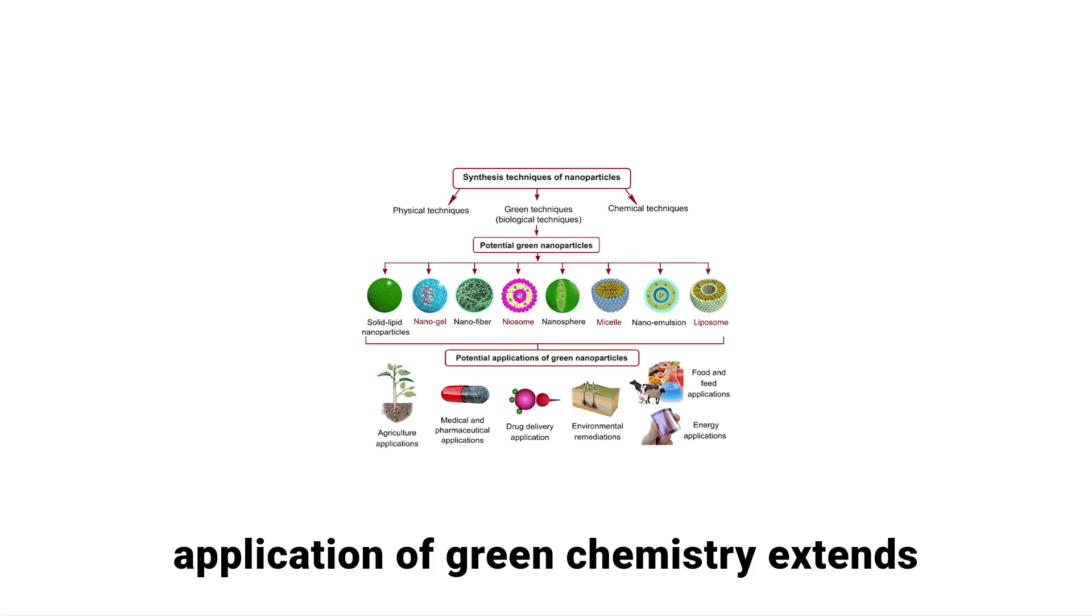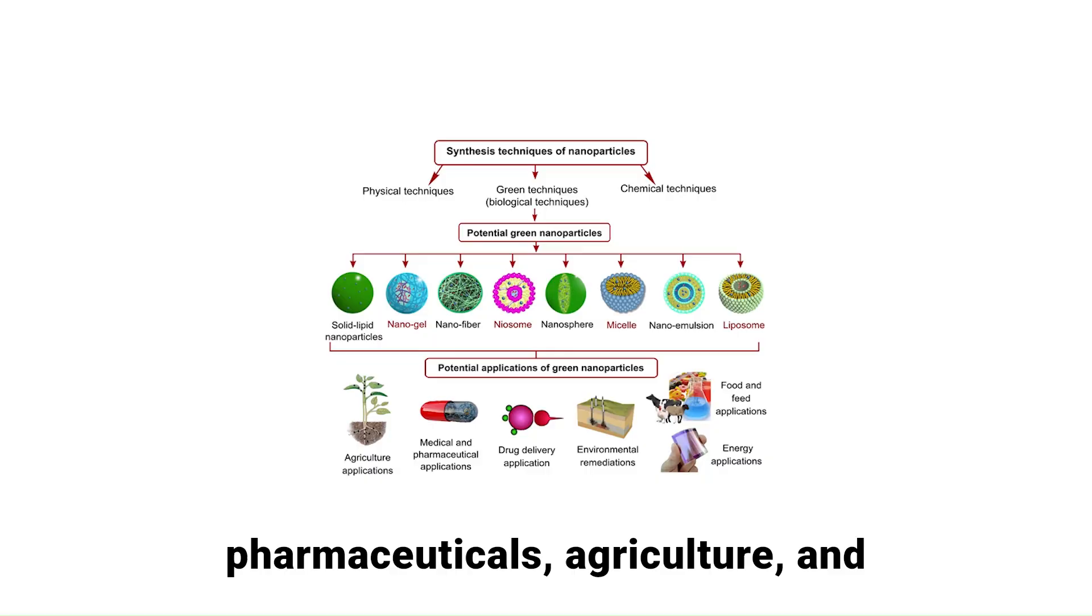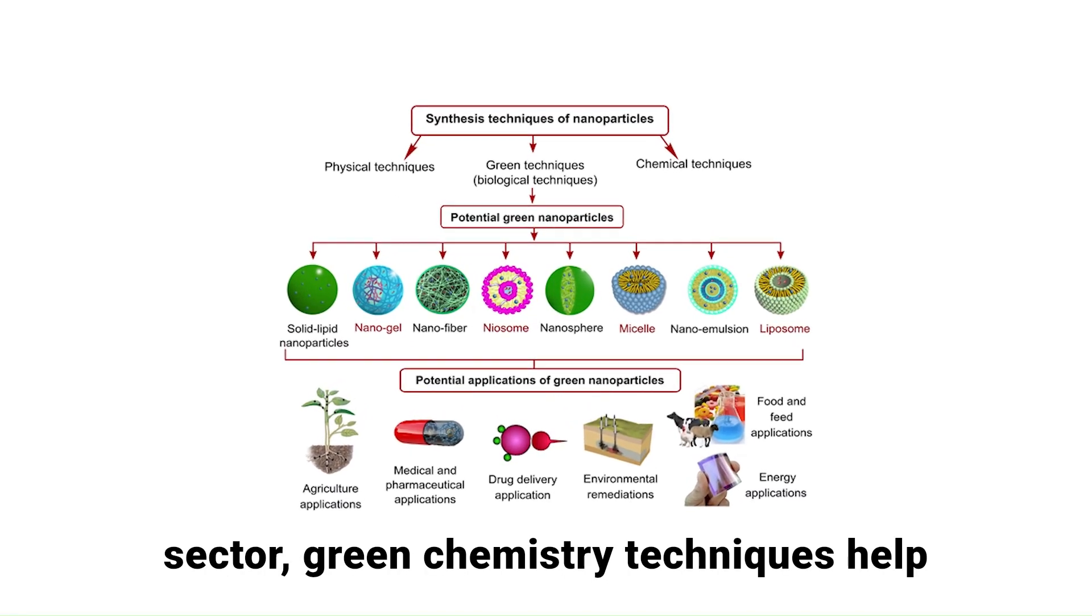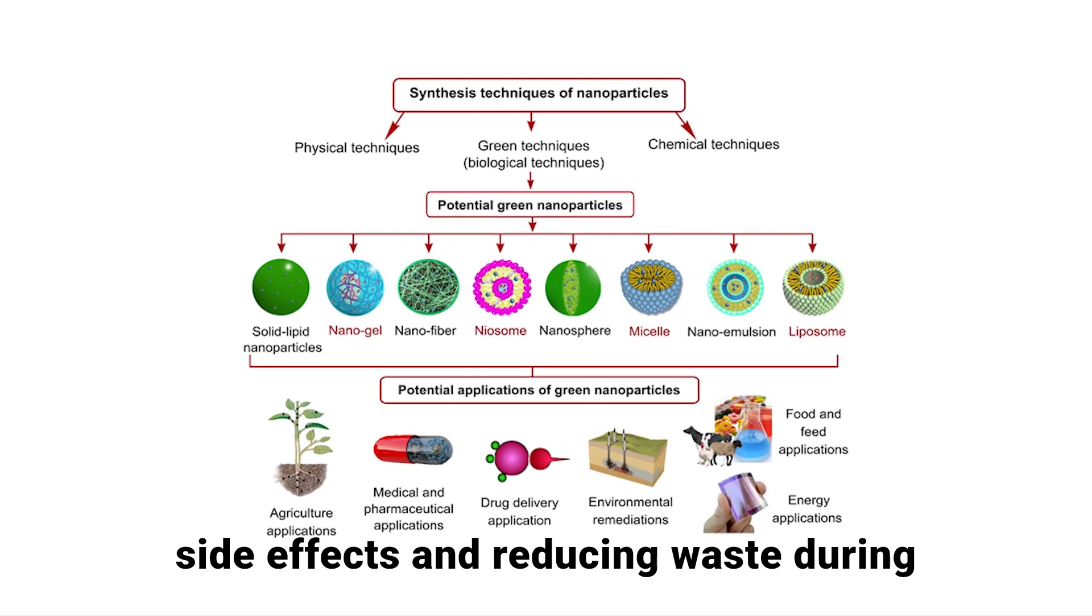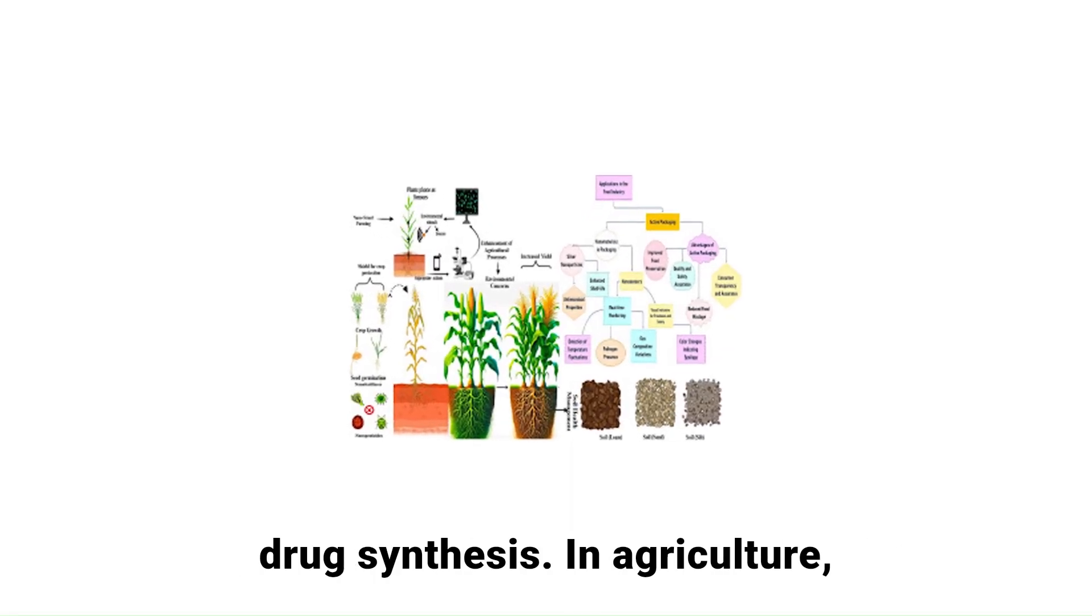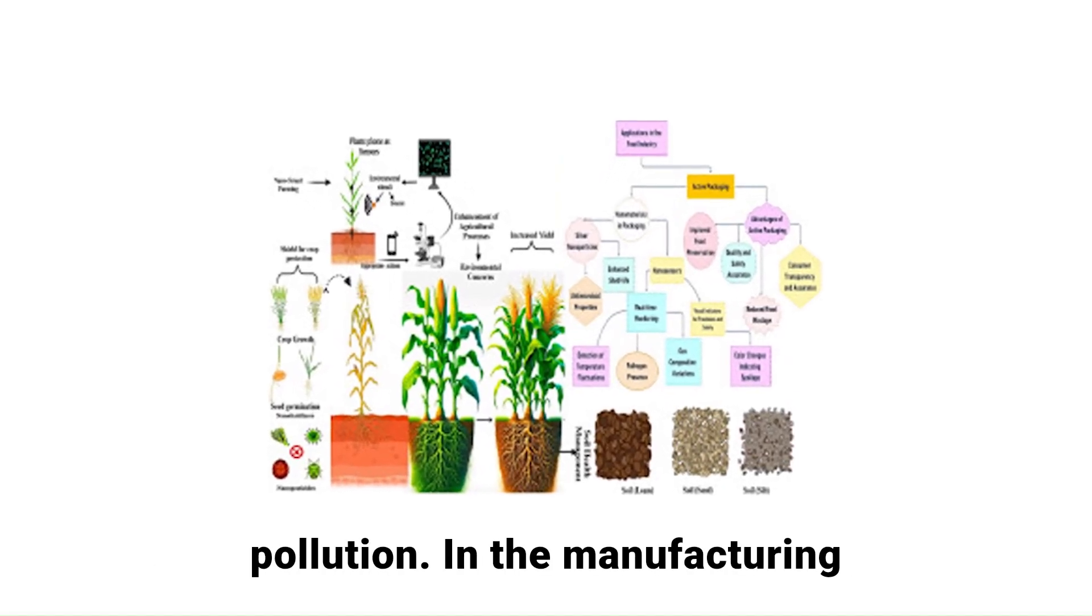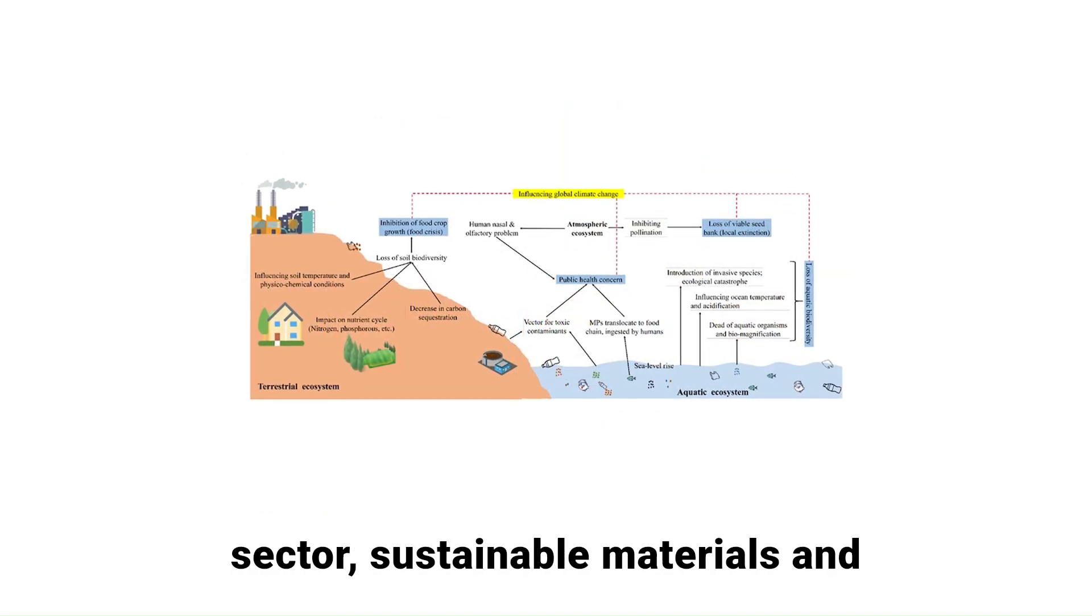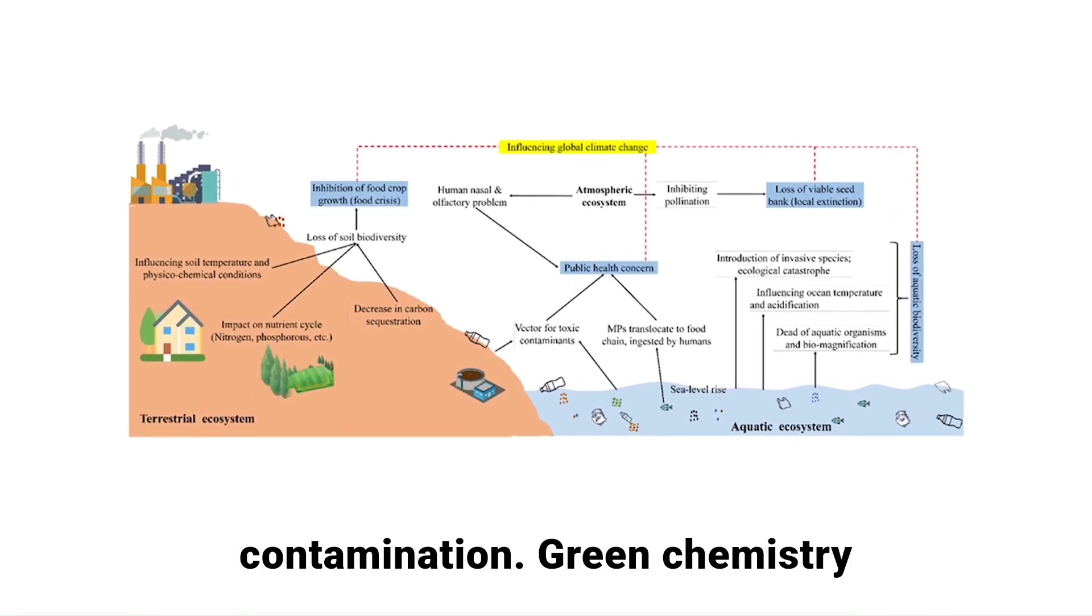The application of green chemistry extends across multiple industries, including pharmaceuticals, agriculture, and manufacturing. In the pharmaceutical sector, green chemistry techniques help in producing drugs with fewer harmful side effects and reducing waste during drug synthesis. In agriculture, eco-friendly pesticides and fertilizers are developed to minimize soil and water pollution. In the manufacturing sector, sustainable materials and biodegradable packaging are used to reduce plastic waste and environmental contamination.